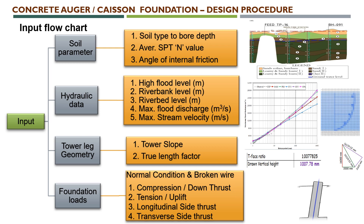The second kind of input is hydraulic data. We need five inputs: one is high flood level, second is river bank level, third is river bed level, fourth and fifth are maximum flood discharge and maximum stream velocity. The river bank level is always at a higher level, followed by high flood level, and finally the river bed is the lowest level. This high flood level, river bed level, and river bank level are required mainly for caisson depth finalization.